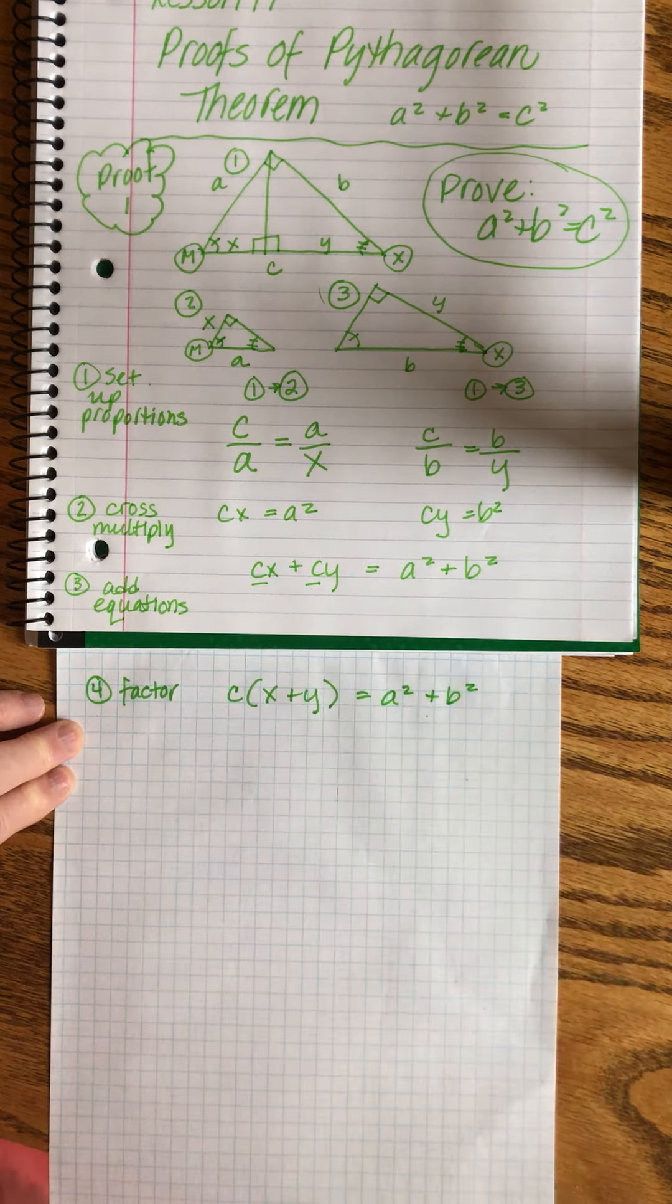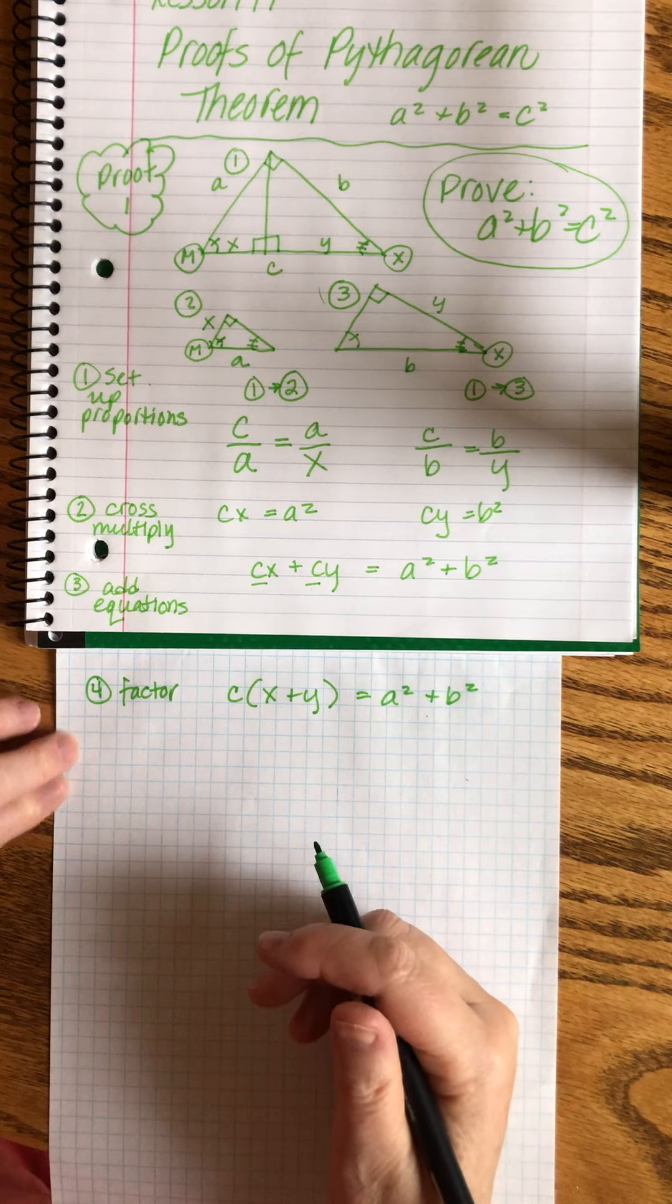So it's going to become c times the quantity x plus y equals a squared plus b squared. Makes sense. That's just algebra. A lot of this is mostly just algebra, right? Once we played with the triangles and got the proportion set up, we've just been doing algebra ever since.